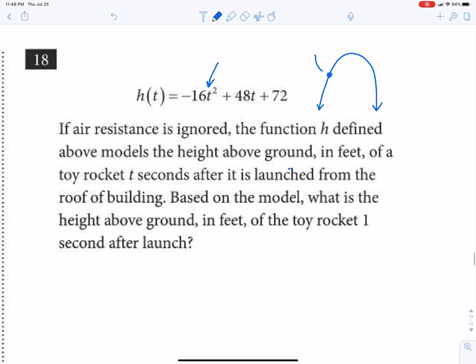So at that point we are at 32 and then plus 72. So 32 plus 72 would be 104, which means after one second it would be 104 feet in the air.